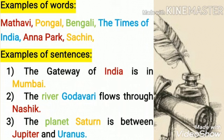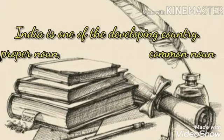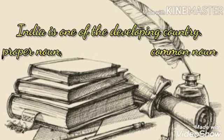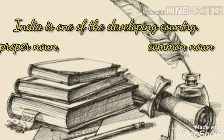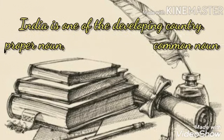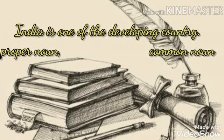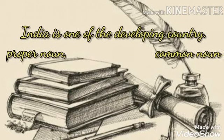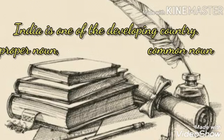One more sentence so you can easily find out the difference. Look at this example: India is one of the developing countries. In this context, 'country' is a common noun and 'India' is a proper noun. But in the previous sentence, 'India' referred to a common noun and 'Mumbai' referred to a proper noun. According to the context, the classification may differ.